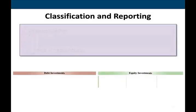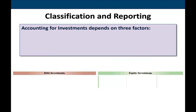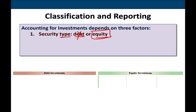What we need to talk about is classification and reporting of investments. For an investment to be classified, first we have to determine whether it's debt or equity — we already talked about that in this section. We'll focus on equity. That's the first thing: the type of the security.